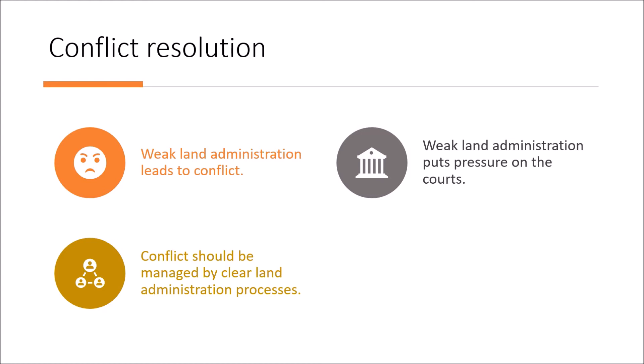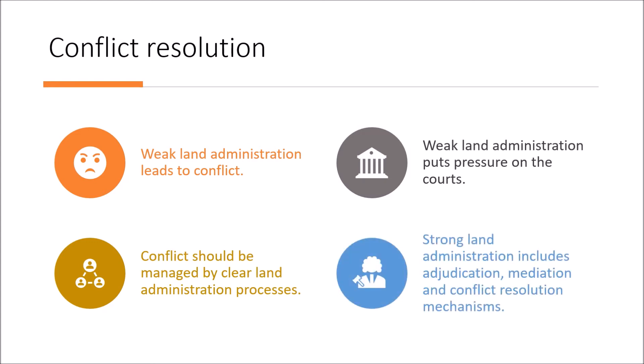When land administration institutions are strong and legitimate, conflicts decrease. Land administration institutions are supposed to enact the country's policies and strategies, and these should include adjudication and conflict resolution institutions. The judiciary is there as the institution of last resort to adjudicate disputes judicially. So one of the purposes of land administration is to mediate rights and claims, thereby decreasing conflict, while complying with principles set out in the constitution, policies, national plans, and laws.